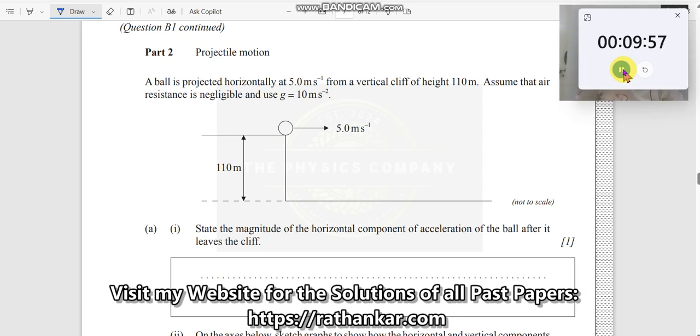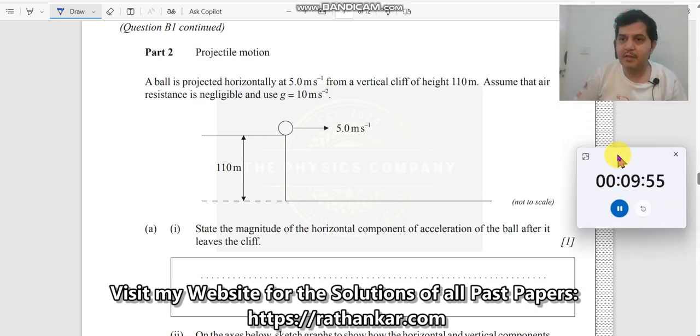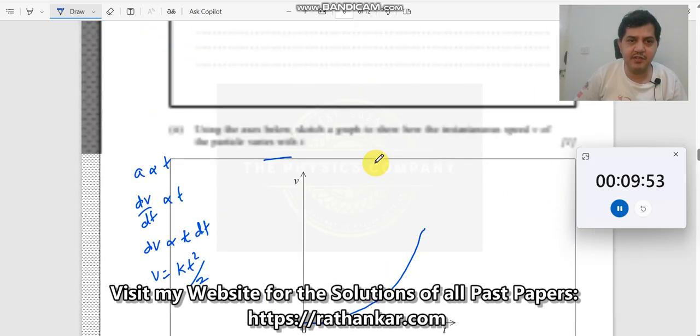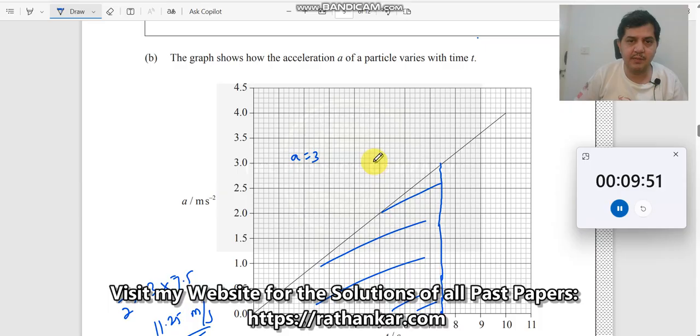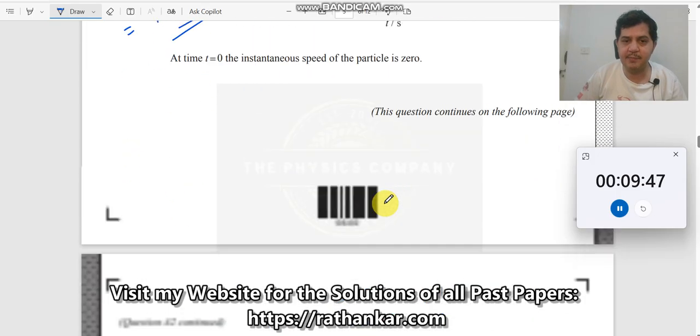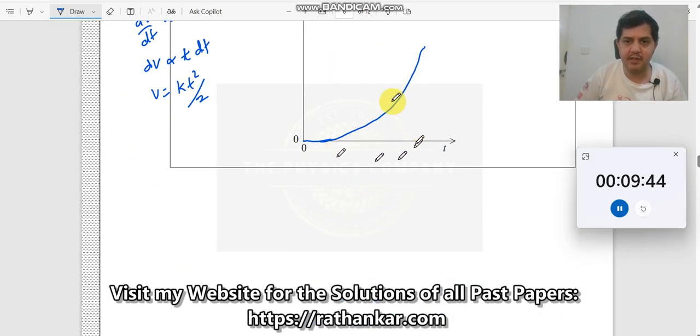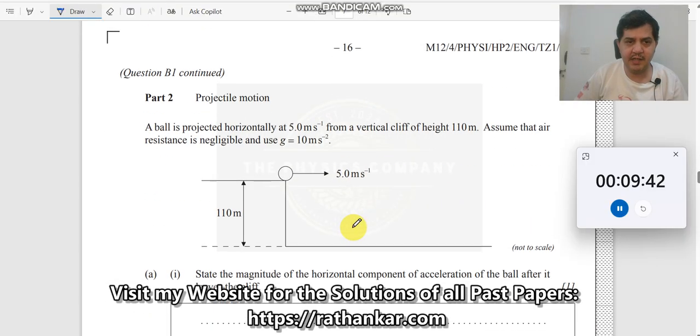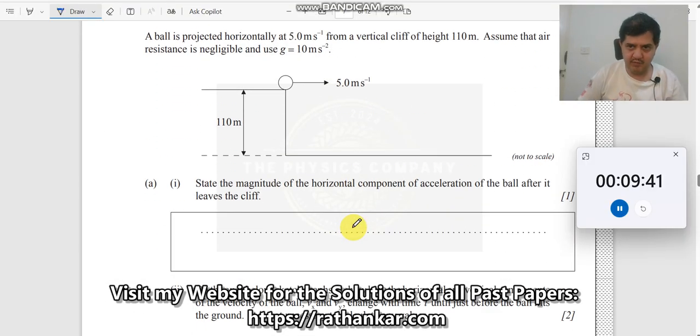Question number 2. This particular question is a continuation from the previous question on kinematics, the difference between average speed, instantaneous speed, and so on. Since time was not sufficient, we truncated that problem and are continuing with the next problem here.